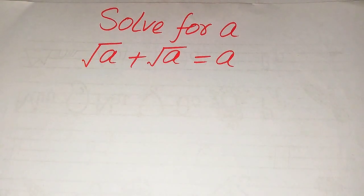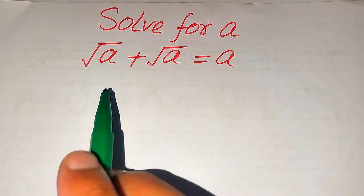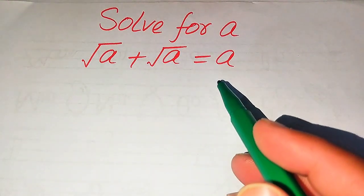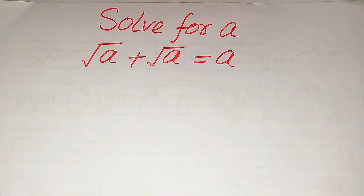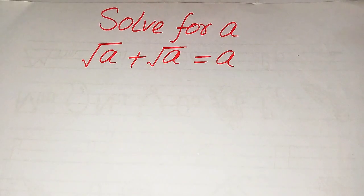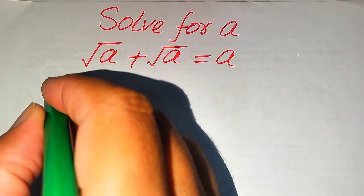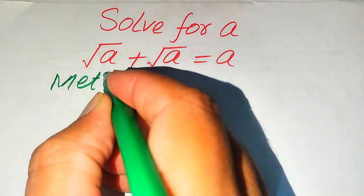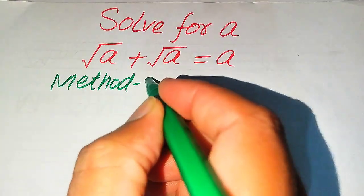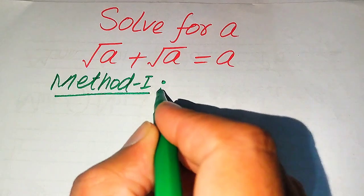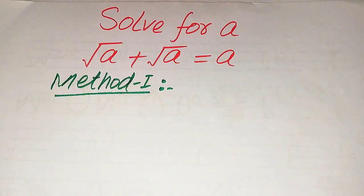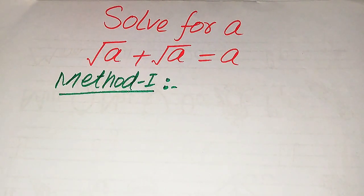Hello everyone. How to solve this problem: for the values of a, if we have square root of a plus square root of a equals a. We solve this problem using two methods. I hope you like both of these methods, but if you have any other method in mind, please don't hesitate to write it in the comment section. Now we move towards the solution of the first method.